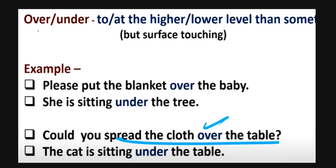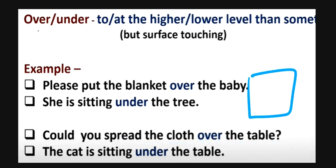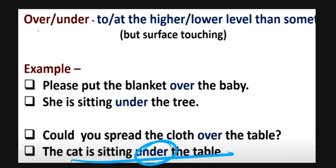For example, could you spread the cloth over the table? The cloth is being on the table. The cat is sitting under the table, so under the table there is a cat sitting.